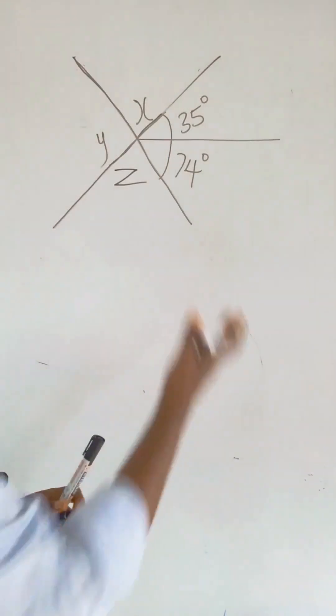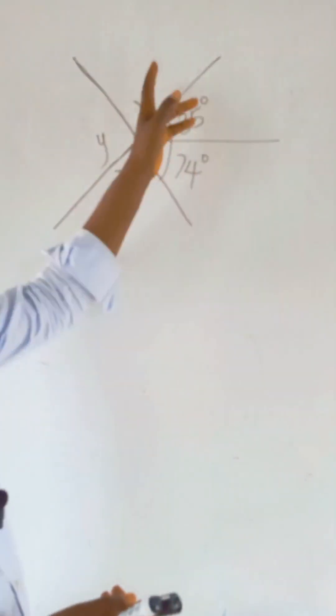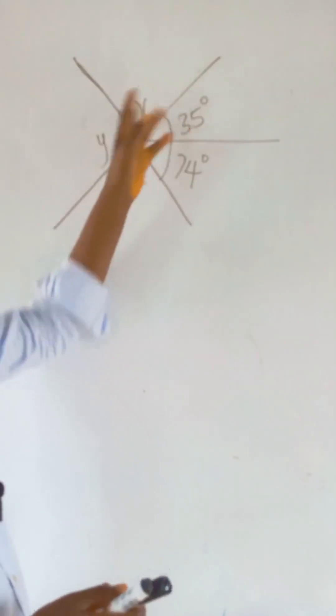This place and this place will always be equal, here and here will be equal. So what we have to do now is calculate X, calculate Y, and then Z will be simple.